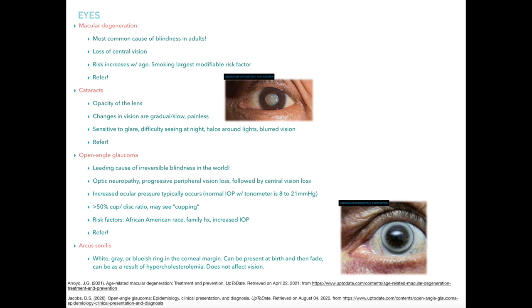Open angle glaucoma is the leading cause of irreversible blindness in the world. It is due to optic neuropathy with progressive peripheral vision loss followed by central vision loss, generally associated with increased ocular pressure. Normal pressure reading with a tonometer is 8 to 21. These patients will also have a greater than 50% cup-to-disc ratio — cupping is a key finding on eye exam. Risk factors include African-American race, family history of glaucoma, and increased intraocular pressure.